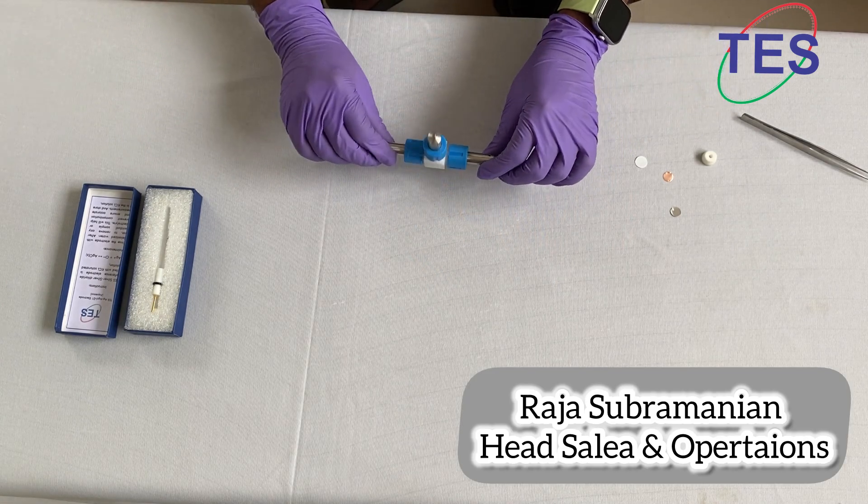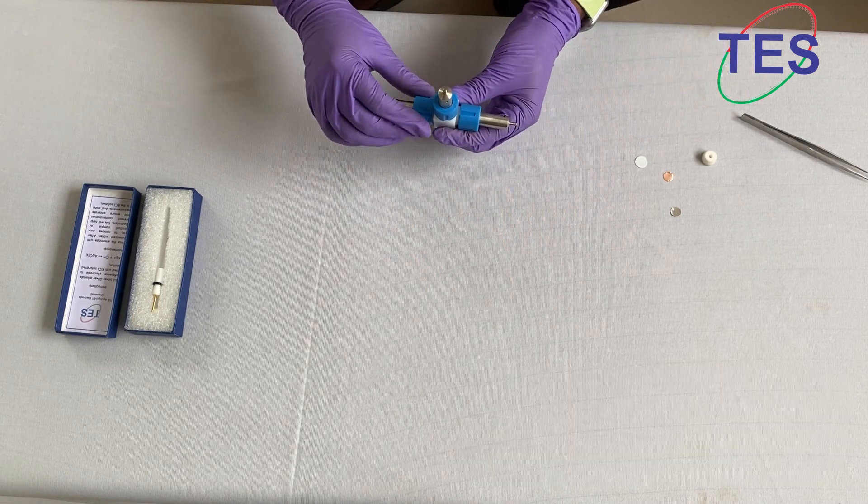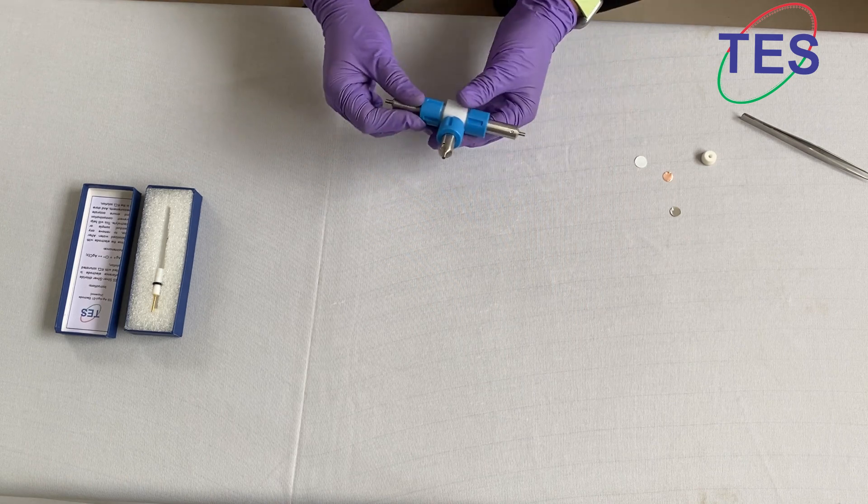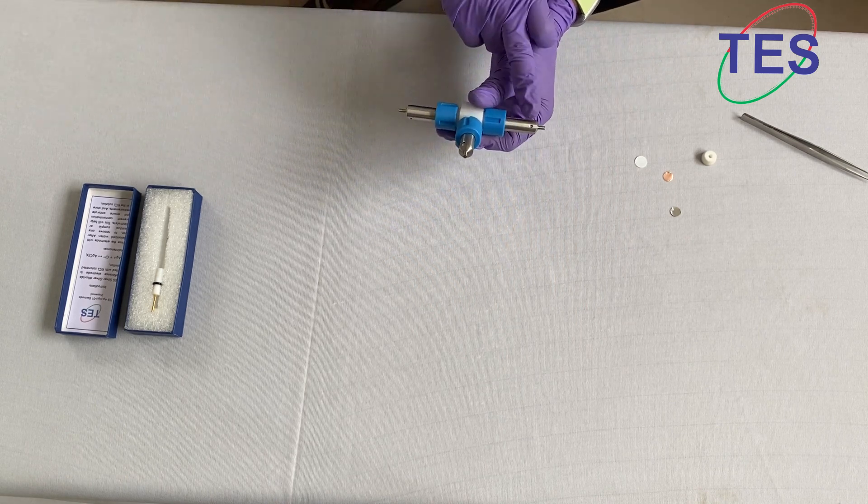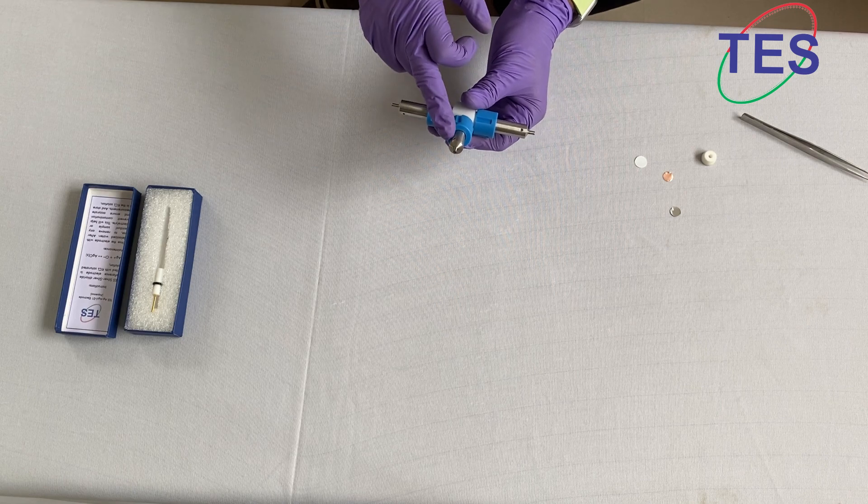Now we are going to see T-shape Swagelok type cells assembly and disassembly. This is your working electrode, this is your counter electrode, and this is your reference electrode.